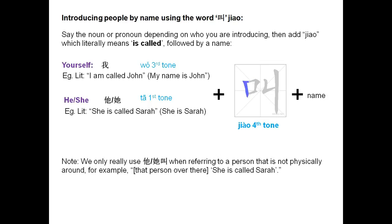Note: you only use 她叫 when referring to a person that is not physically around. For example, 'that person over there is called Sarah.'